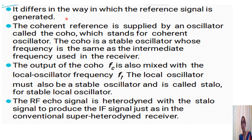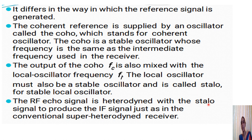The coherent reference is applied by a stable oscillator whose frequency is the same as the IF frequency used in the receiver. FC is also mixed with the stable local oscillator frequency FL at the input side. The RF echo signal received is FL plus FC plus or minus FD, containing the Doppler frequency shift.